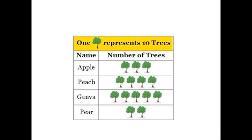Here, one tree represents 10 trees. How many apple trees are there? There are 3 tree pictures, so 10 plus 10 plus 10 equals 30 apple trees. Peach trees: 4 pictures, so 4 into 10 equals 40 peach trees. Guava trees: 5 pictures, so 5 into 10 equals 50 guava trees. Pear trees: 2 pictures, so 2 into 10 equals 20. These are pictographs and this is how you read them.